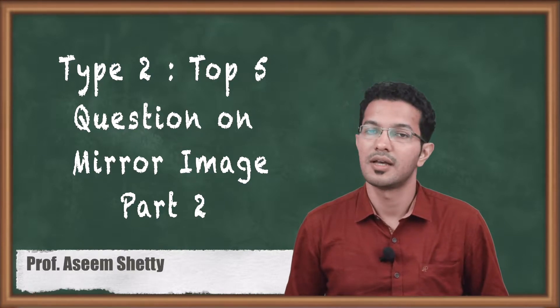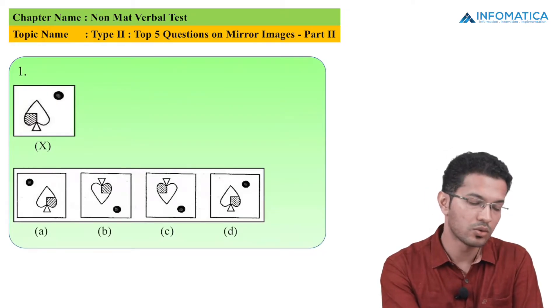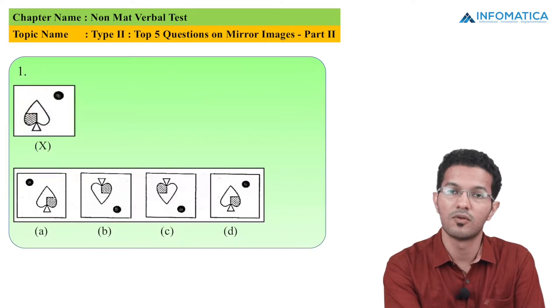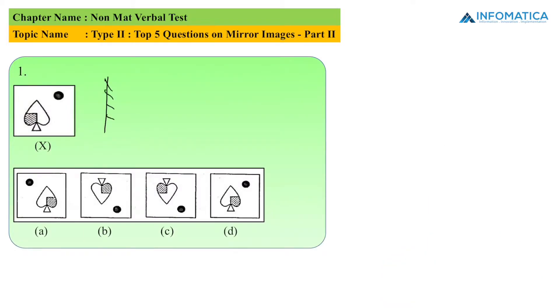So let us start with the MCQs. Students, if I see the first MCQ, I have a leaf like structure and I am having a shaded circle on the right hand side. So let me go for the solution.